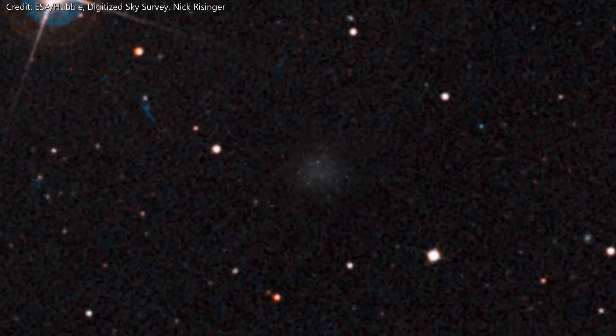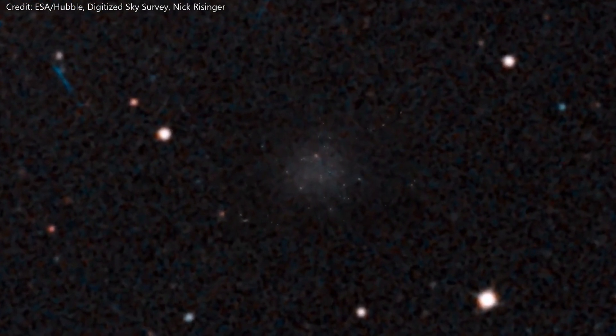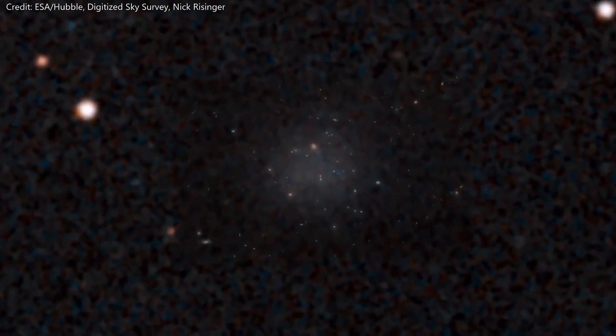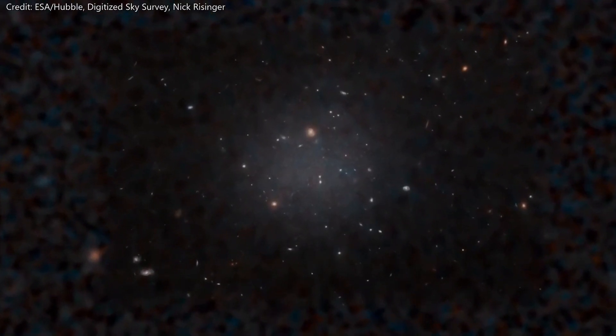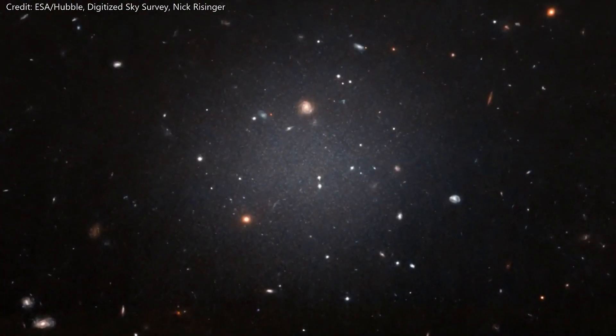NGC 1052-DF2 or just DF2 for short is 6.5 million light-years away and roughly the same size as our Milky Way galaxy. The bizarre nature of it is the lack of dark matter in it.